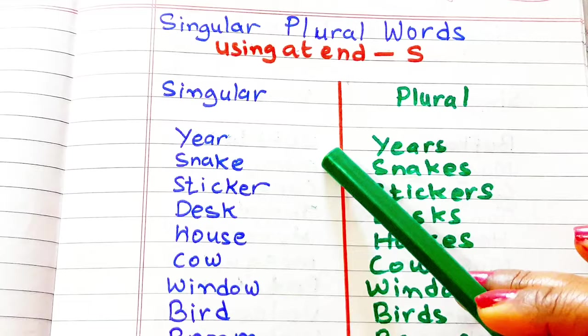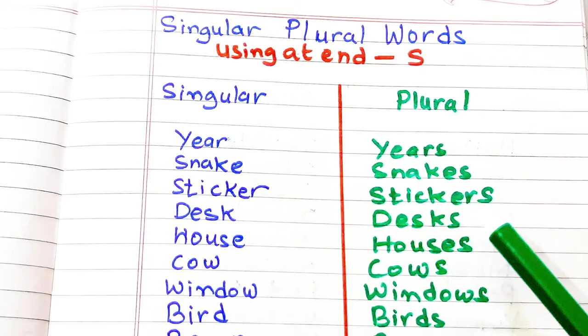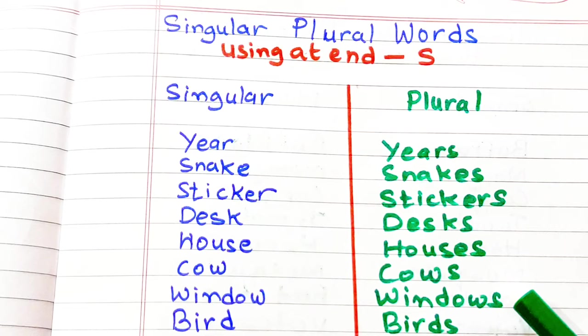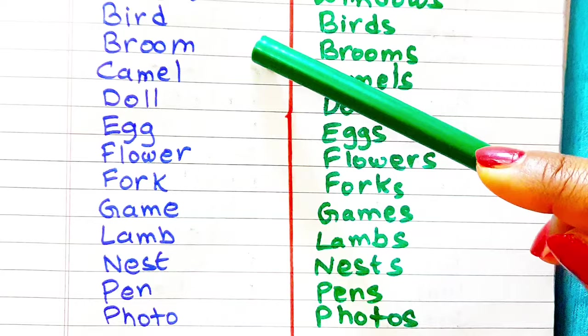Ear, ears. Snake, snakes. Sticker, stickers. Desk, desks. House, houses. Cow, cows. Window, windows. Bird, birds. Broom, brooms.